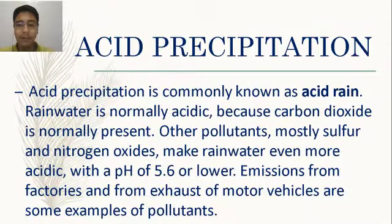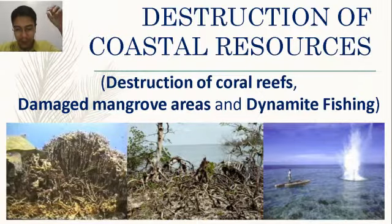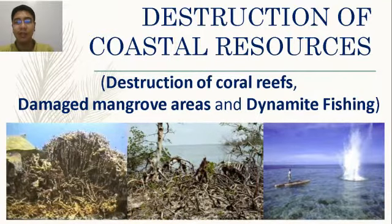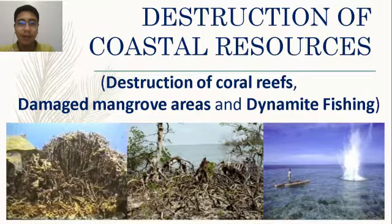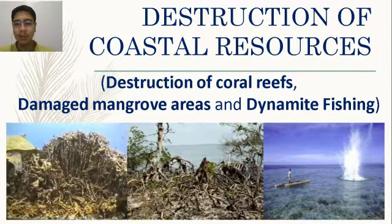Muroami involves dropping heavy objects onto coral reefs to drive out fish. Cyanide fishing uses chemicals poured into the water — fish become paralyzed, float to the surface, and are easily collected, but the chemicals destroy the ecosystem.